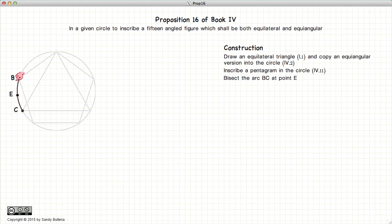Now let's bisect the arc BC at the point E. And then we draw the line BE and we copy that line using the methods previously described at the beginning of this book.